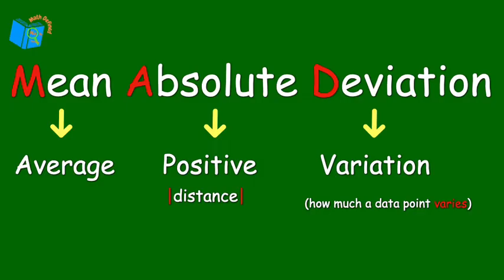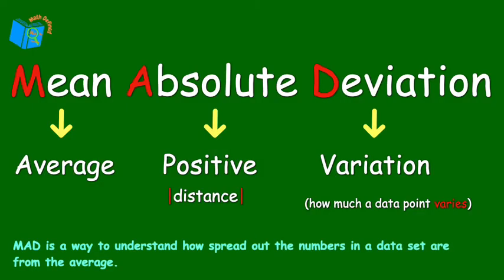In short, mean absolute deviation, or MAD, is a way to understand how spread out the numbers in a data set are from the average. It also helps us see how much the data in our group varies from each other and from the average.